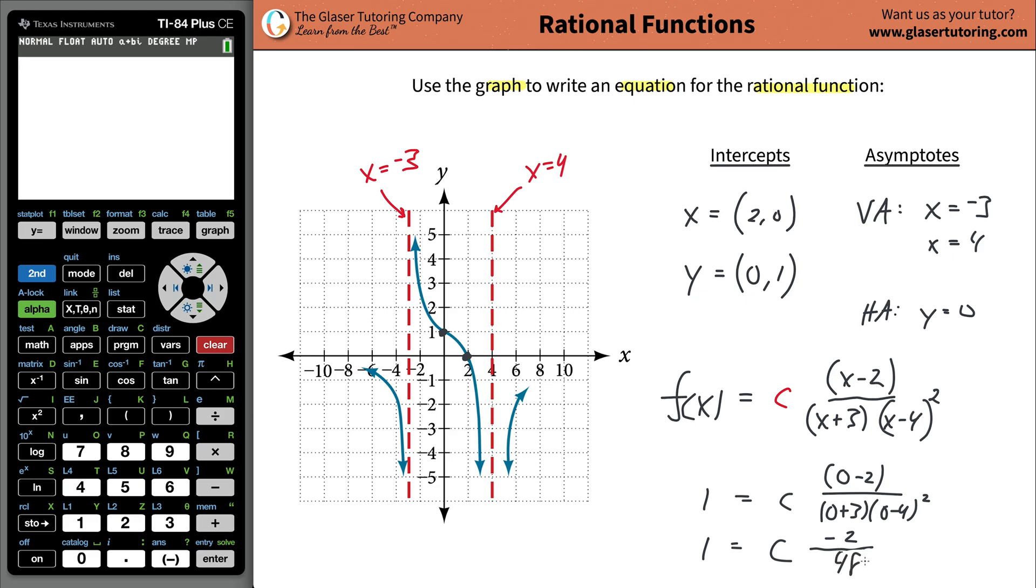To solve for c, you have to multiply the right-hand side by that reciprocal, 48 over negative 2. Whatever you do to the right, you've got to do to the left. So there's going to be 48 over negative 2, and 48 divided by 2 gives us negative 24. That equals your constant.